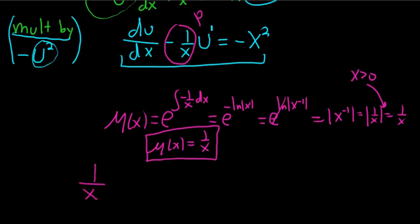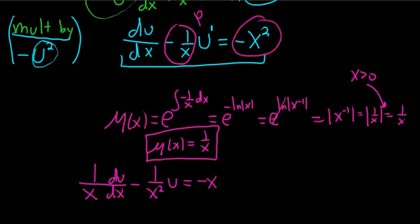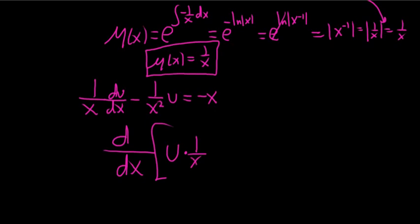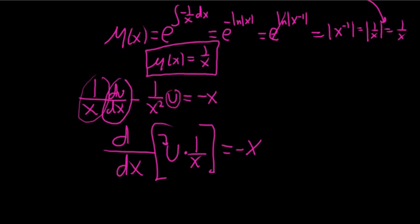We multiply everything by mu(x) = 1/x: we get 1/x du/dx minus 1/x squared times u equals negative x. The left-hand side is always the derivative of u times the integrating factor. We can verify with the product rule: derivative of u times 1/x equals du/dx times 1/x plus u times the derivative of 1/x, which is negative 1/x squared. So the left side is d/dx of [u times 1/x] and the right side is negative x.